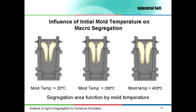This slide presents the influence of initial mold temperature on A-segregation. The simulation has been made for initial mold temperatures of 20, 200 and 400 degrees Celsius. The area affected by A-segregation is lower if the mold temperature is low.